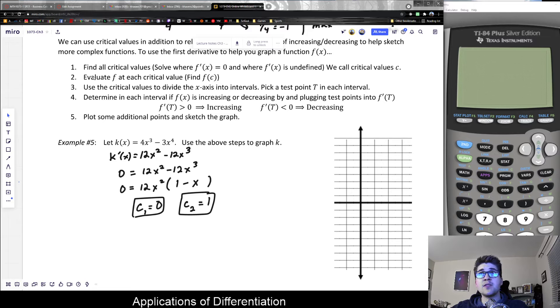Next, evaluate f at each of those critical values. We now know when x equals zero and when x equals one, those correspond to critical values, but we don't know what the points are. We plug those in to find the critical coordinates. If I plug zero into the function, that's just zero. If I plug in one, this gives me 4(1) - 3(1) = 1. So those are my two critical points: (0,0) at the origin and (1,1).